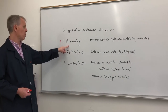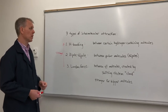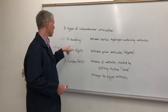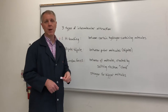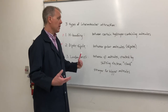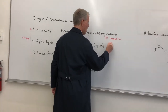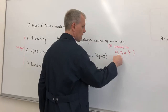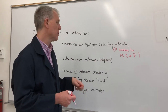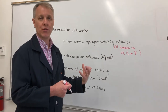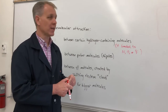The final and strongest type of intermolecular attraction is what we call hydrogen bonding — a slightly confusing term because it's not actually a chemical bond, but an intermolecular attraction between molecules. To do hydrogen bonding, a molecule must have hydrogen, and that hydrogen must be covalently bonded to nitrogen, oxygen, or fluorine. These three elements are all highly electronegative and small, so they attract the shared electrons very strongly, concentrating them around those atoms.